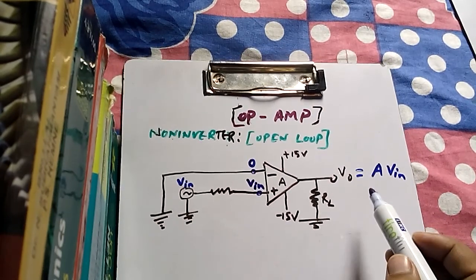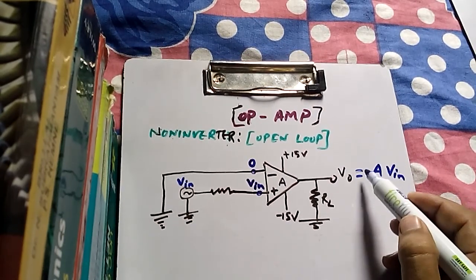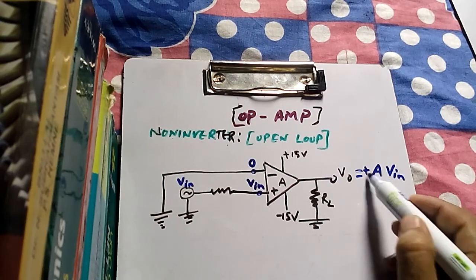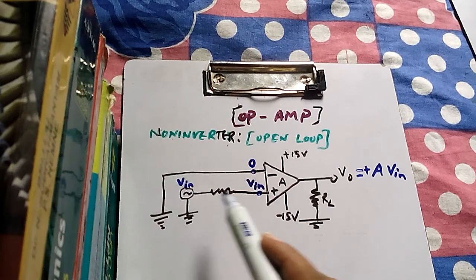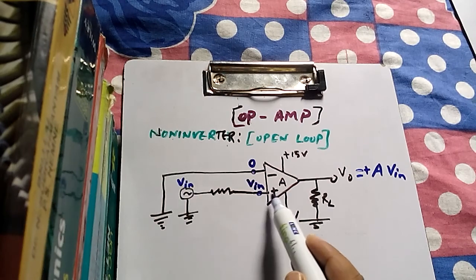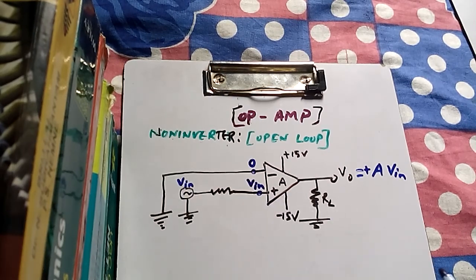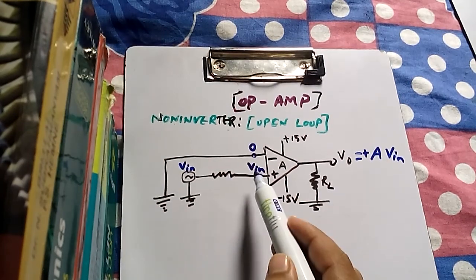The output is simply A × Vin. For the inverter, the output was −A × Vin; now it is +A × Vin, because the input signal is given to the positive, non-inverting terminal.